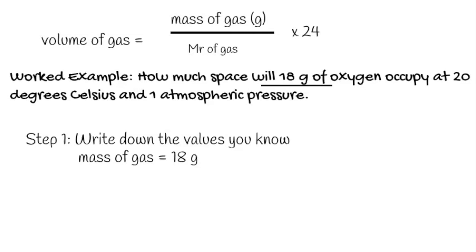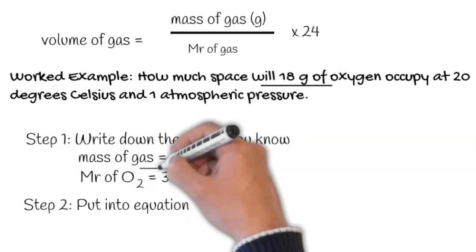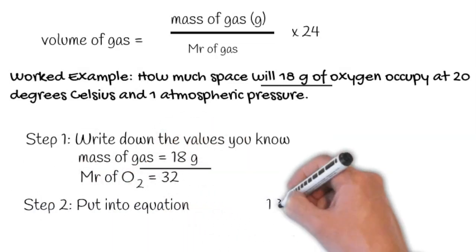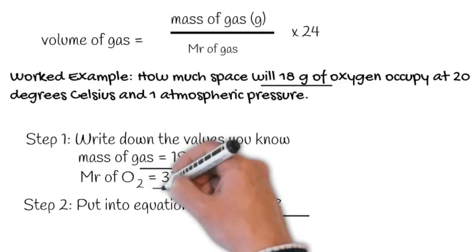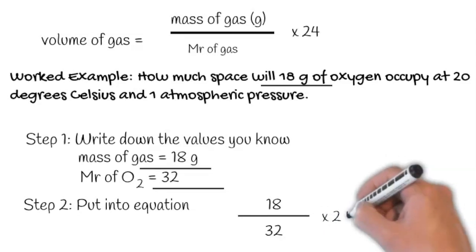The mass of the gas is 18 grams, and the Mr of the gas O2, if we look on the periodic table, is 32. We then need to put these into our equation. So the mass of the gas is 18 divided by the Mr, which is 32, times that by 24.